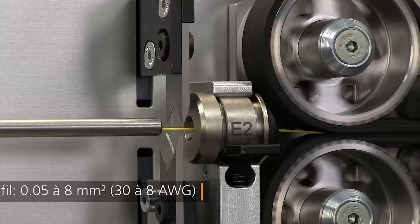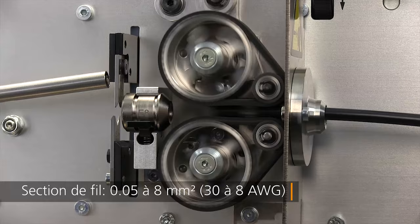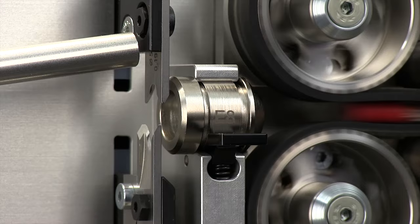Le EcoStrip 9380 combine les dernières technologies avec la précision renommée de Schleuniger. Il est plus facile que jamais pour produire une large gamme d'applications du niveau d'entrée.